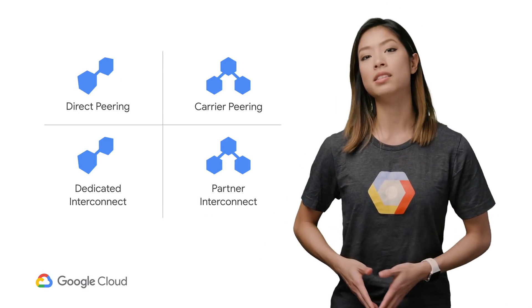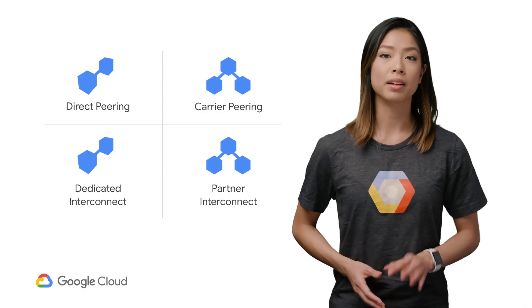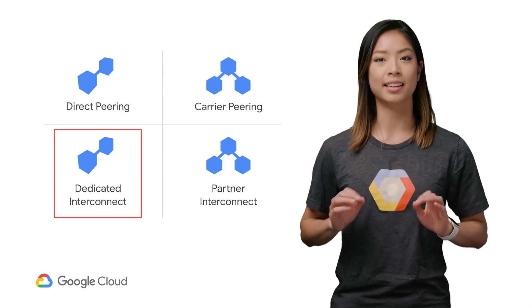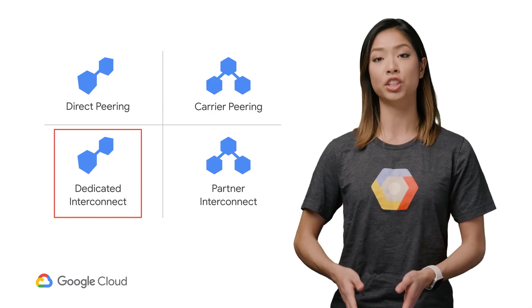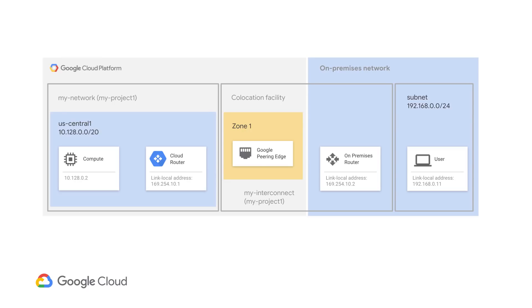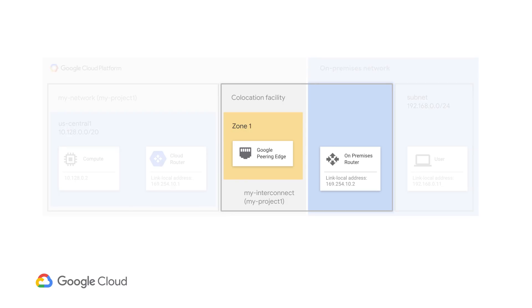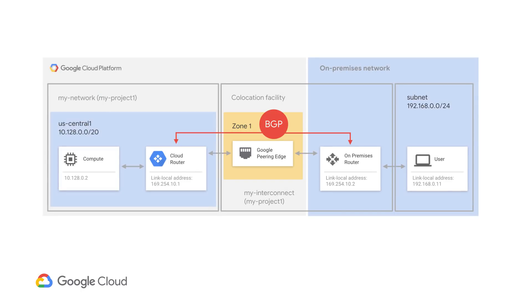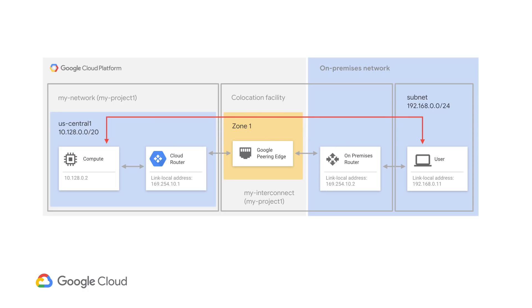Google Cloud Interconnect provides a few options that can suit your specific needs, but the one I'll focus on is Dedicated Interconnect, which provides direct physical connections between your on-premise network and Google's network. You set up a cross-connect between your own router and the Google network in a common co-location facility. A BGP session is configured over the interconnect between the cloud router and your on-premise router. BGP is a protocol that helps route traffic to subnets using the shortest paths between edge routers. Traffic from your on-premise network can reach your Google Cloud VPC and vice versa.